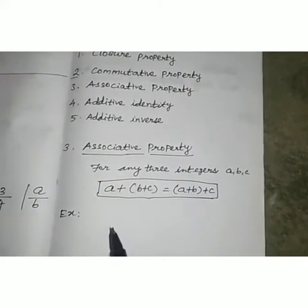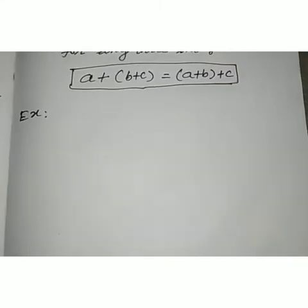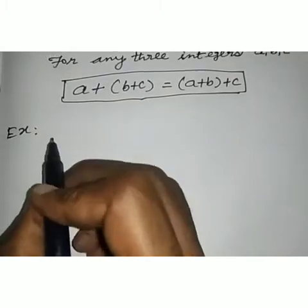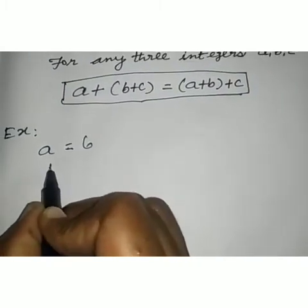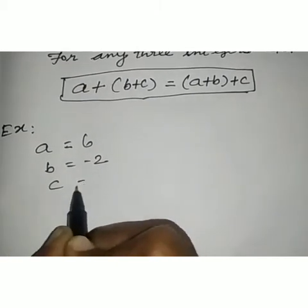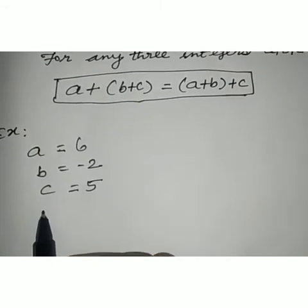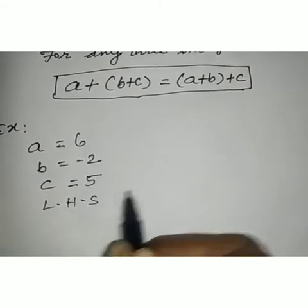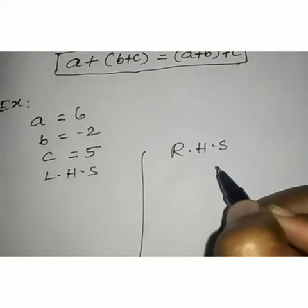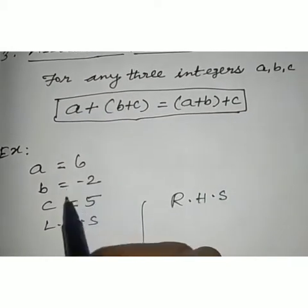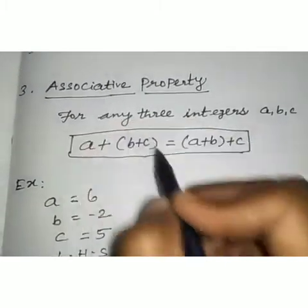Now we see an example. Let a equal to 6, b equal to minus 2, and c equal to 5. We will apply these values in the associative property, checking the left hand side and the right hand side.